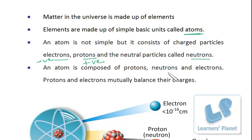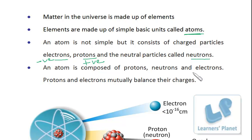An atom is composed of protons, neutrons, and electrons. Protons and electrons are equal in number, so they mutually balance their charges. For example, if there are three protons and three electrons in the atom, they balance each other. So overall, the atom has no charge. This is really important — atom has no charge because it has equal numbers of protons and electrons, which balance out.